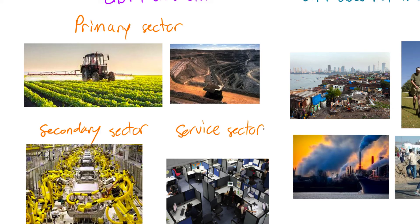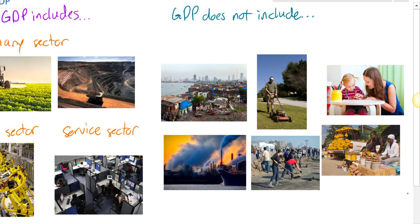That's all GDP is — the value of the stuff produced in a country in a year. The problem is people tend to talk about GDP like it is the most important measure of well-being in society, but there are a lot of things that GDP does not include. Let's talk about those now.